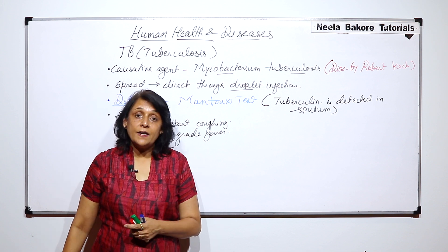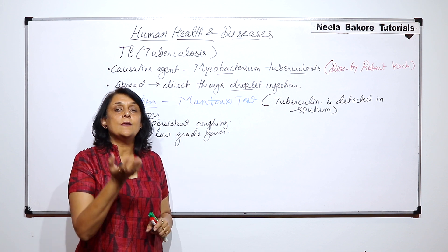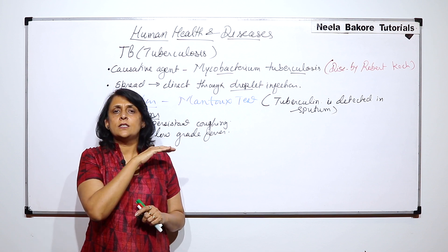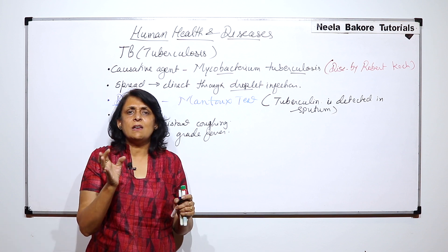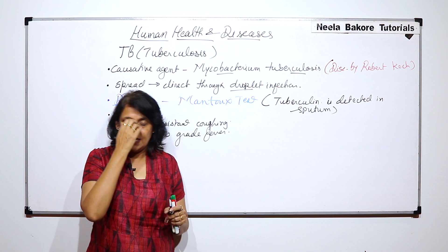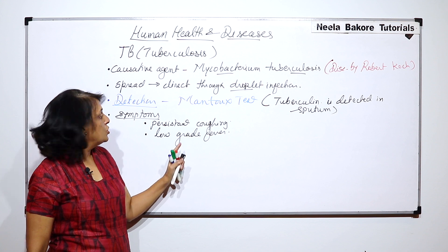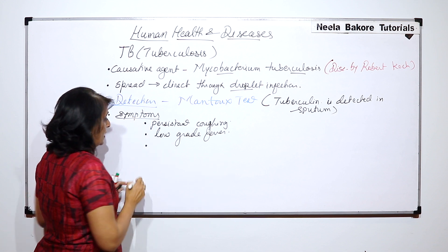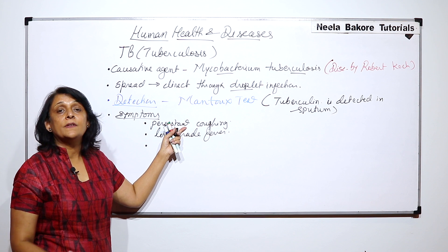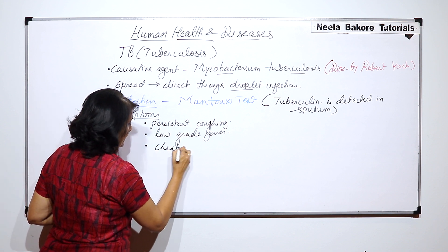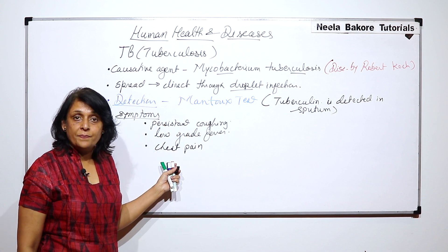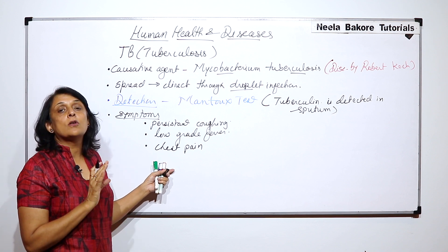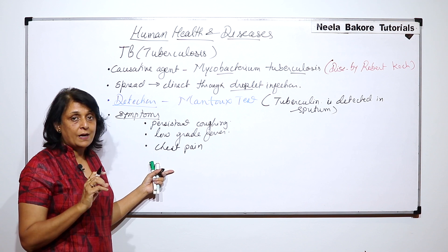Whenever there is any infection in our body, our body temperature slightly rises — this is actually a defense mechanism to fight against the pathogen. But if there is persistent low-grade fever around 99°F, the person feels feverish. This symptom is again commonly ignored. Because of this persistent coughing there is also chest pain. These are some initial symptoms. Tuberculosis is a chronic disease — we have discussed acute and chronic — and slowly this disease spreads over a very long period of time.